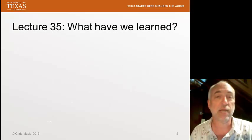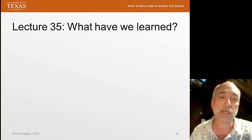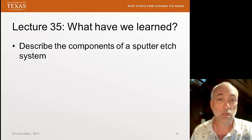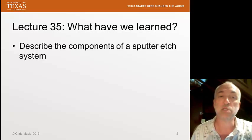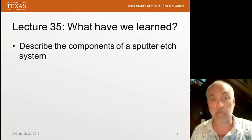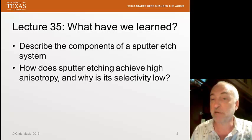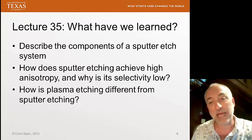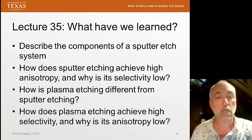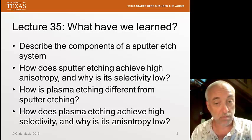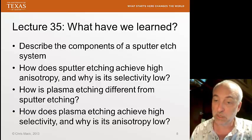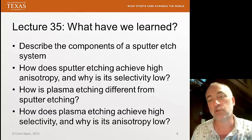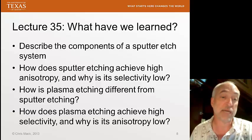So what have we learned in Lecture 35? You should be able to describe the components of a sputter etch system, and understand the difference between sputter etch and sputter deposition in a typical parallel plate reactor system. How does sputter etching achieve high anisotropy, and why is its selectivity low? How is plasma etching different from sputter etching, and how does it achieve high selectivity while its anisotropy is low? Next time, we'll look at how we break this trade-off between selectivity and anisotropy and get high values of both. Until then.